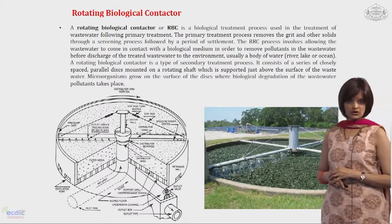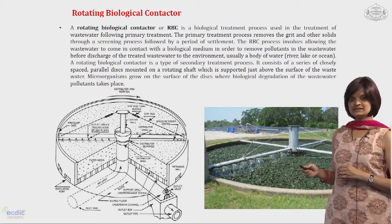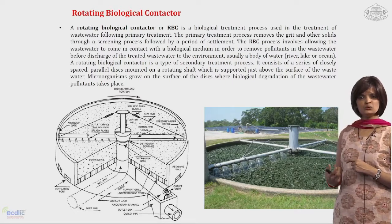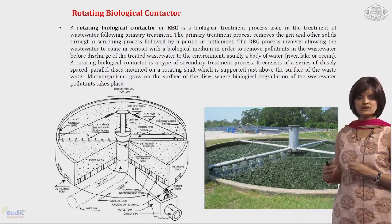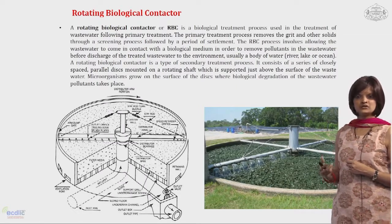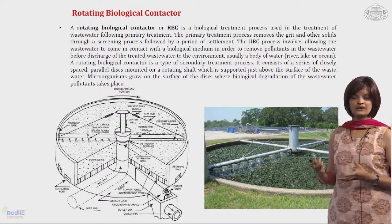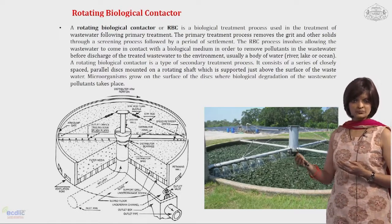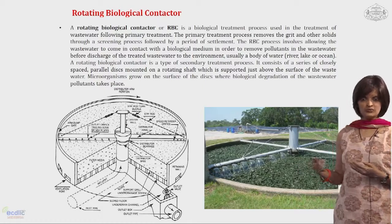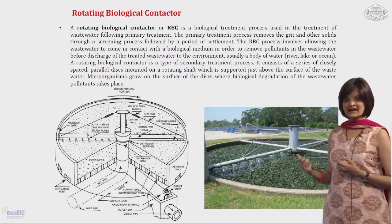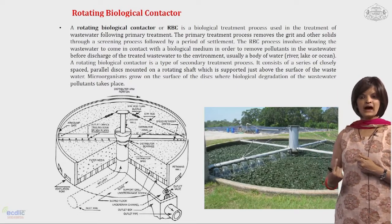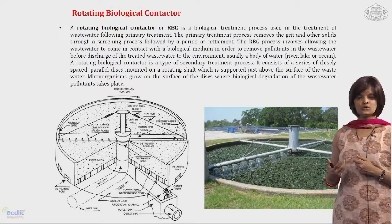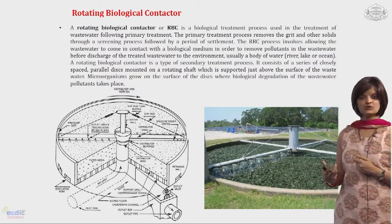The third system is rotating biological contactors, also known as RBC. It is a biological treatment process in a round shape that removes grids or solid materials through screening processes and settlement. This process involves allowing wastewater to come in contact with biological medium to remove pollutants before discharge into lakes or rivers. As the RBC rotates, it facilitates the activity of microorganisms growing on the surface of the disc, where biological degradation of wastewater pollutants takes place.